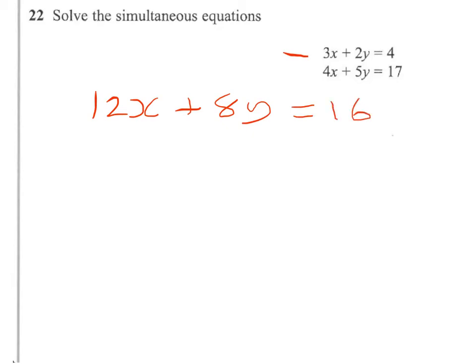And on the bottom, I'll get 3 lots of 4x, which is 12x - that's what I want. 3 lots of 5y is 15y, and 3 lots of 17 is 51.